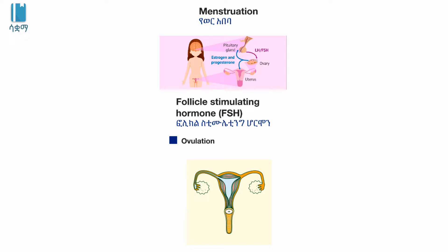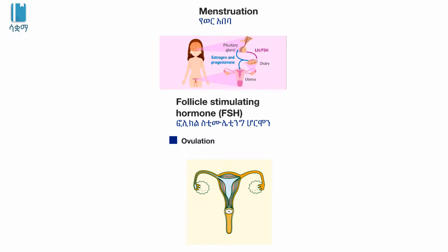The progesterone hormone affects the endometrium. The ovary and endometrium interact during the cycle. The estrogen hormone plays a role in the endometrium. Reproductive health comes in as an important aspect of this discussion.